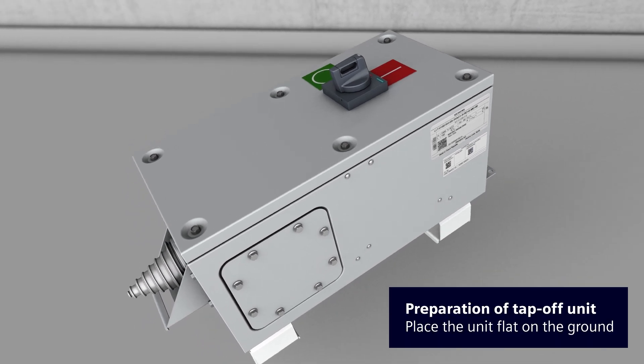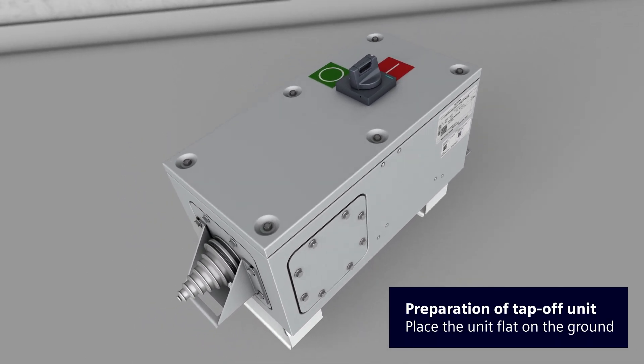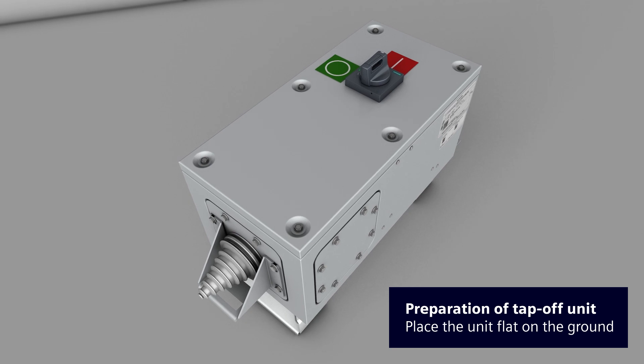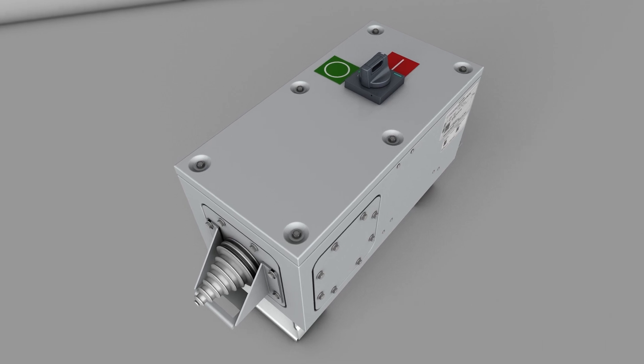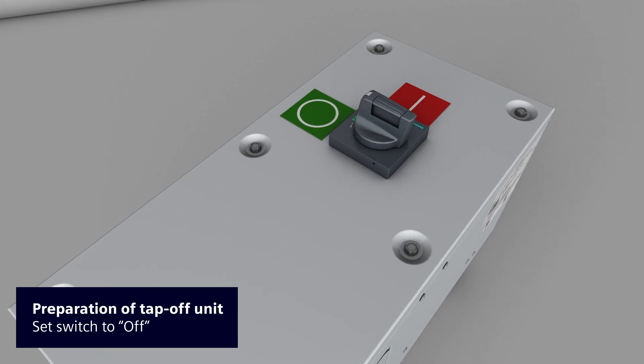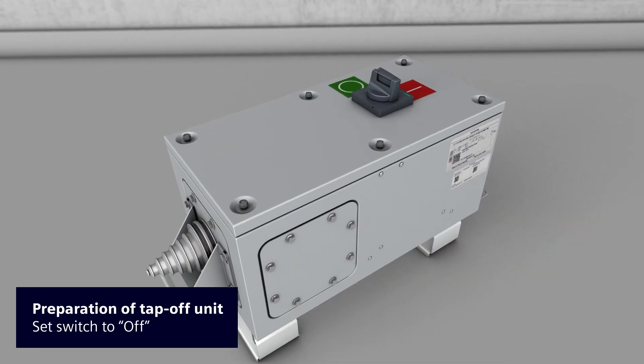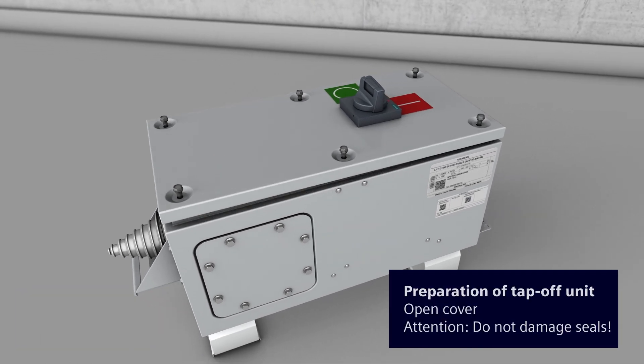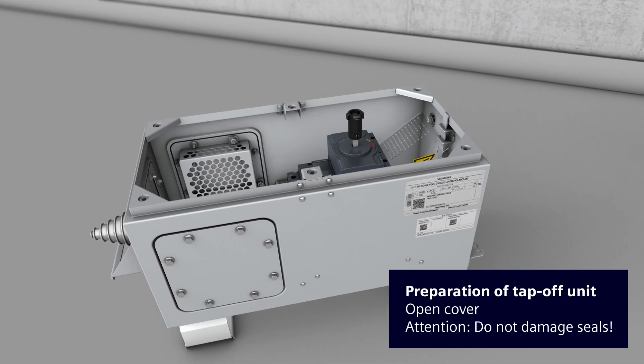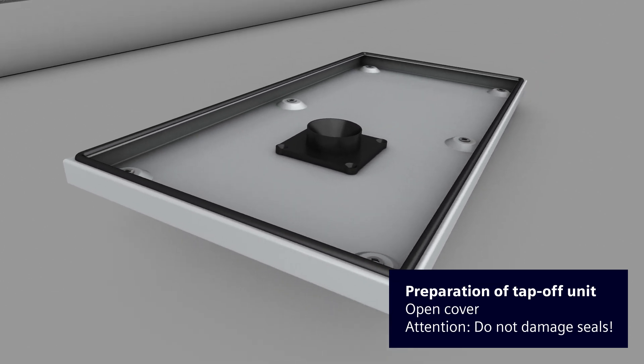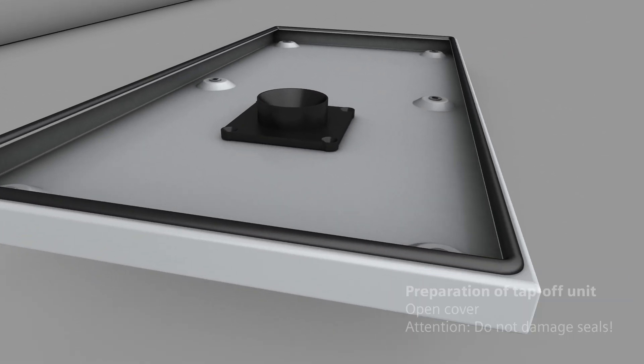Prepare the tap-off unit for installation. Place the tap-off unit flat on the ground. Set the switch position of the door-mounted rotary operator to off before removing the cover. Detach the cover screws and lift off the cover. Make sure not to damage the seals arranged on the inside of the cover.